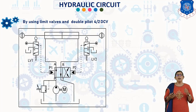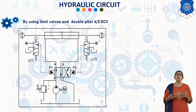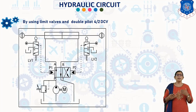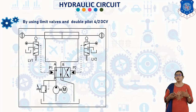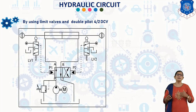In the second position of the 4/2 DCV, oil under pressure flows from P to B and A to T. Hence, the cylinder retracts. By the end of retraction, the cam presses limit valve LP2, and oil under pressure flows to pilot P2. This shifts the spool of the direct control valve back to the first position and the cycle is continued.